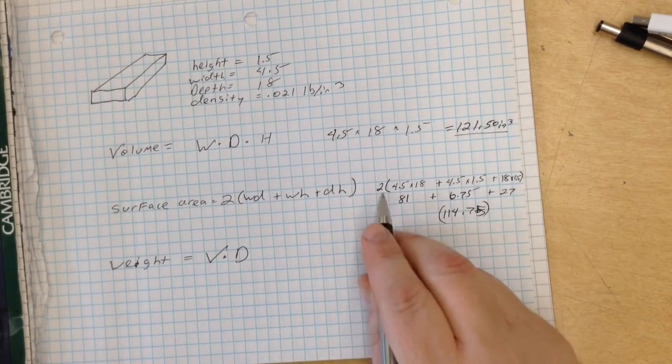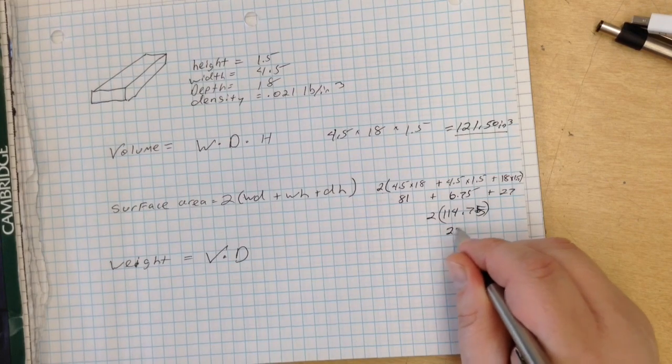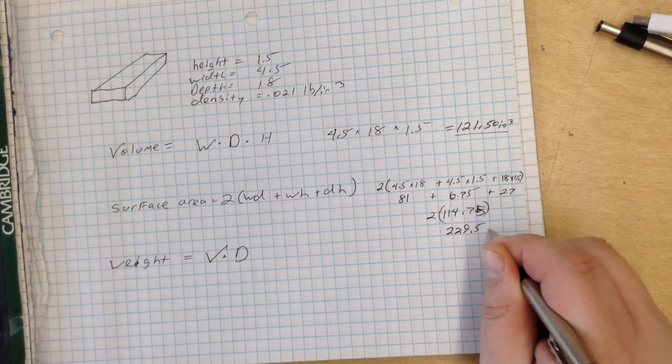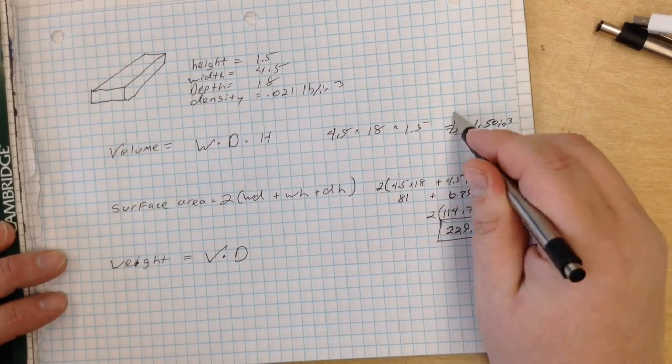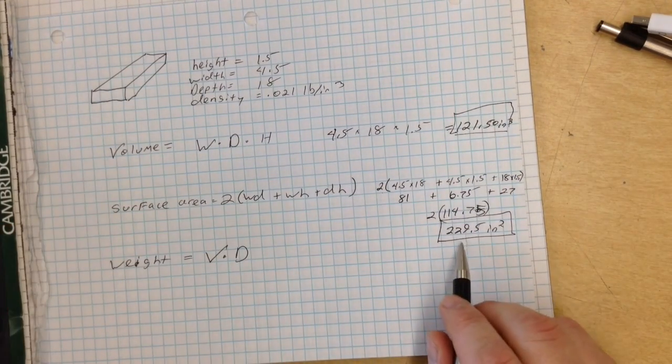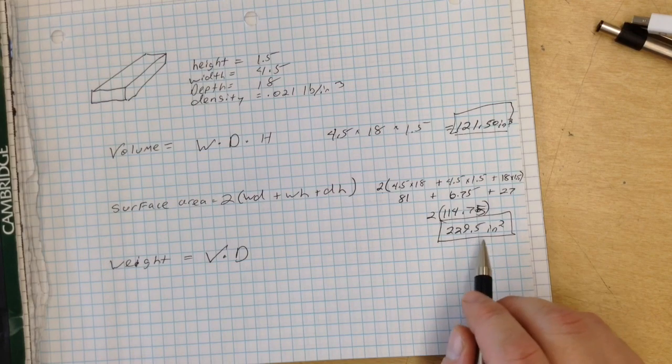Now we need to multiply that times 2, and that gives us 229.5 inches square. So the surface area of that board is 229.5 inches square.